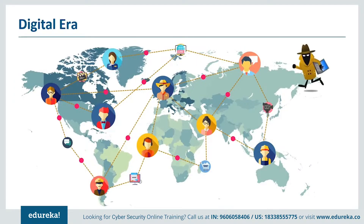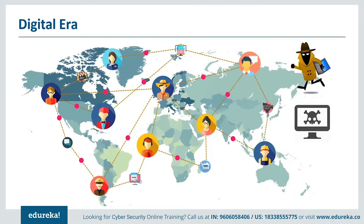Cyber criminals are in the business of stealing sensitive data like contact numbers, credit card information, and bank account details that they sell to third parties for profit. There are also malicious hackers with personal enmity hacking into systems to expose host vulnerabilities, and hacktivists inspired by political and social activism who hack systems opposed to their ideology. Making use of these vulnerabilities present in the internet's architecture, people are trying to initiate attacks in cyber space — we call them cyber attacks.